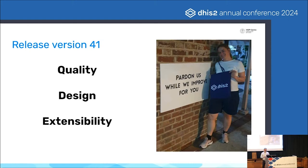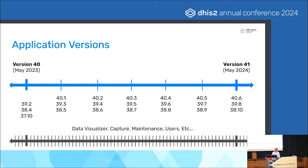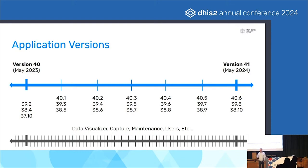We want 2.41 to be a release to depend on for a while — a release that many of you will upgrade to and stay on for a while. One of the reasons for this is that we did slow down the major release cadence a bit this time. We had a one-year release cycle, partially realizing that it is not easy to stay on top of the latest release when you have a new release every six months.